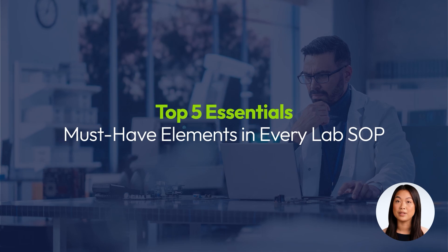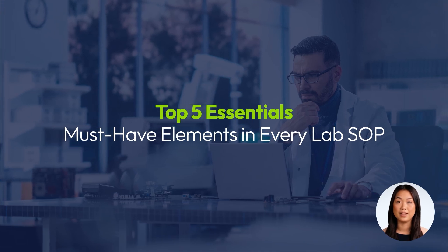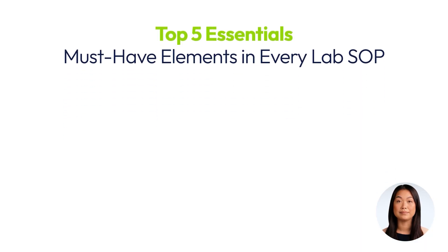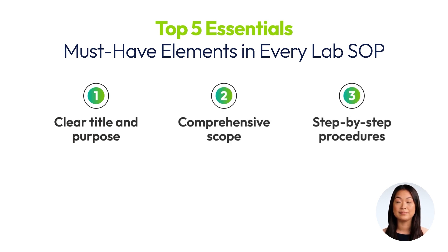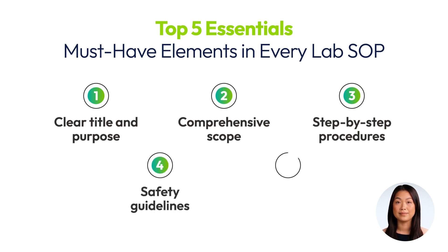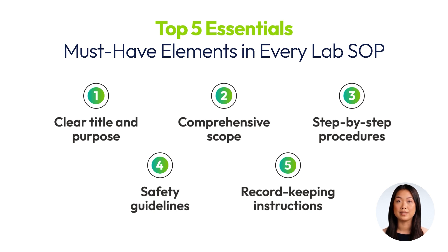Every lab SOP should include these five essential elements: 1. A clear title and purpose. 2. Comprehensive scope. 3. Clear step-by-step procedures. 4. Appropriate safety guidelines. 5. Record-keeping instructions. These elements ensure that your SOP is both functional and compliant with industry standards.